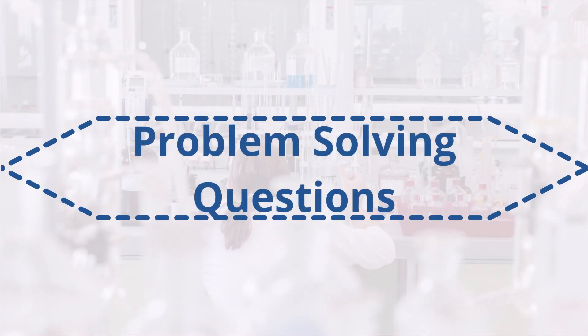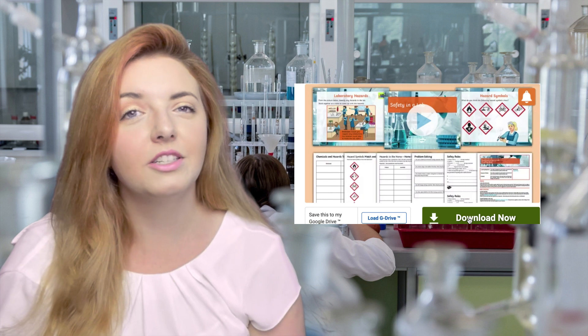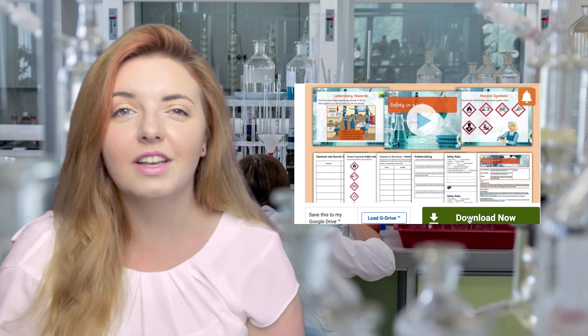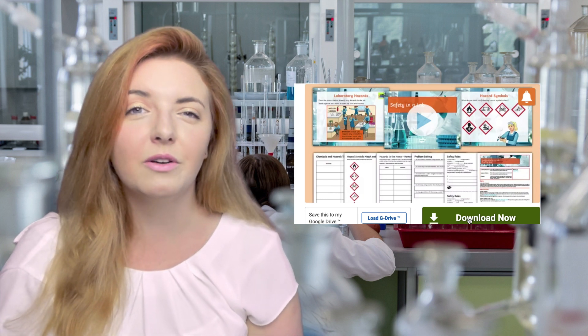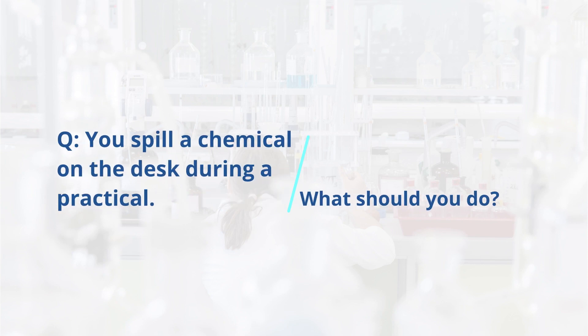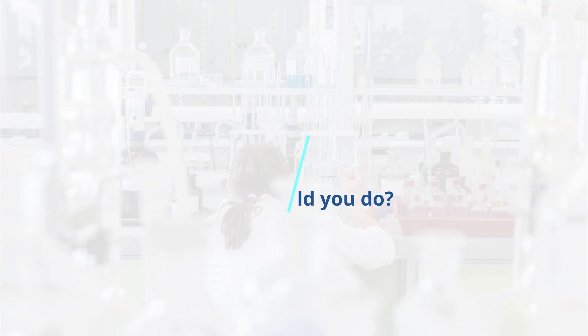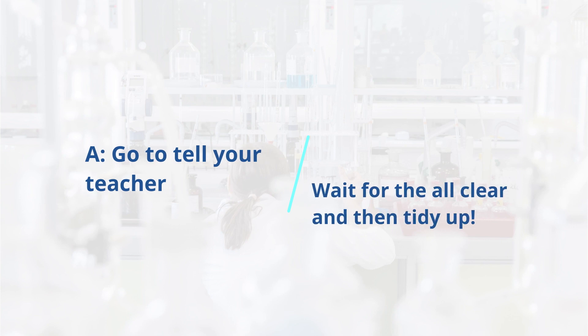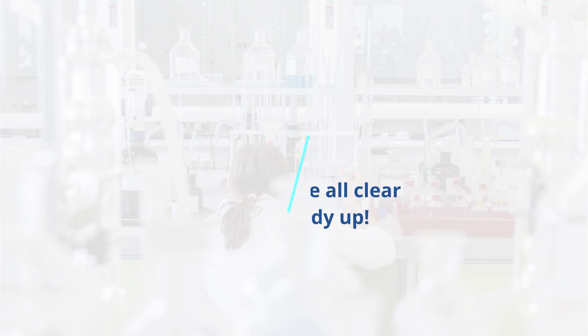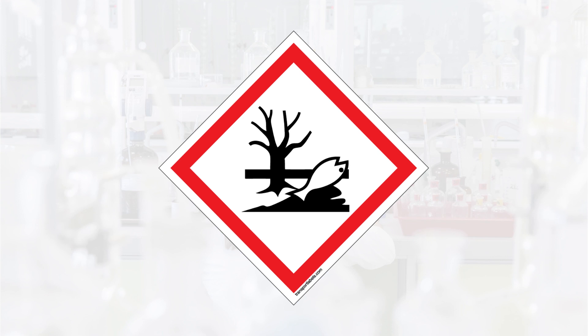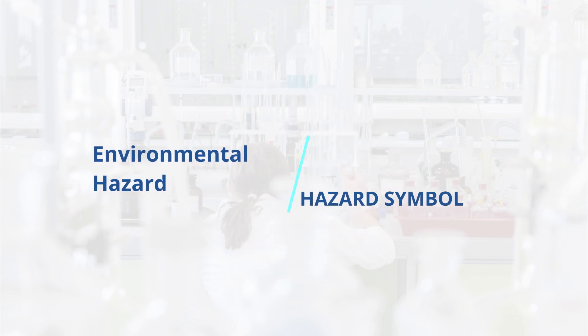Let's finish our lesson today with some problem-solving questions. For a full list of questions to test yourself, you can find them at the link below for our lesson pack. So you spill a chemical during a practical — what do you do? That's right, we go and tell our teacher and they'll come over and give us the all clear to tidy up. Can we remember what this symbol means? That's right, it means environmental hazard.